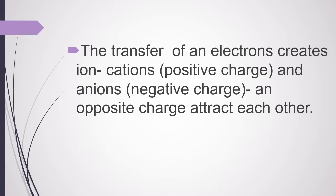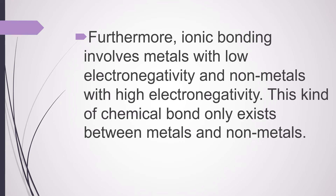The transfer of electrons creates ions — cations with a positive charge and anions with a negative charge. Opposite charges attract each other. Furthermore, ionic bonding involves metals with low electronegativity and non-metals with high electronegativity. This kind of chemical bond only exists between metals and non-metals.